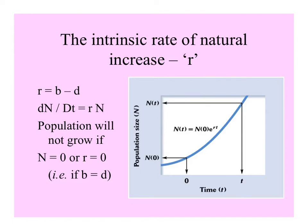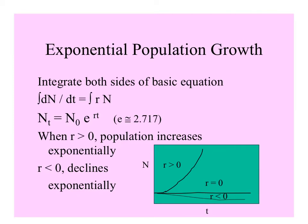The population won't grow if either the initial size is zero or the growth rate r is zero. Integrating both sides of the basic equation gives N(t) = N(0) × e^(rt), where e has a value of about 2.7. When r is greater than zero, population increases exponentially; if it's less than zero, it declines.